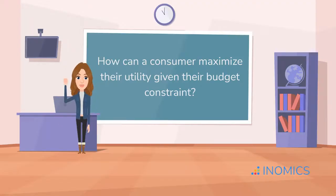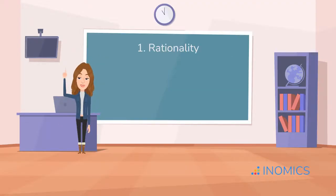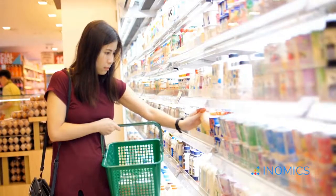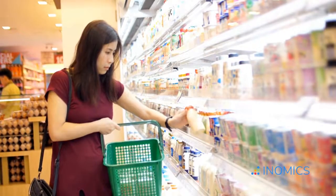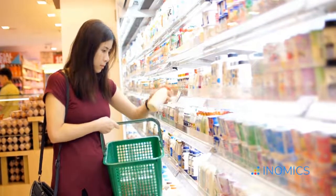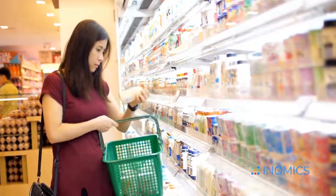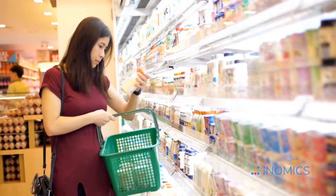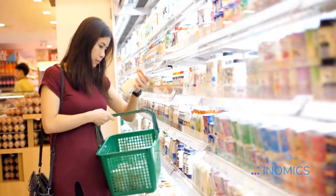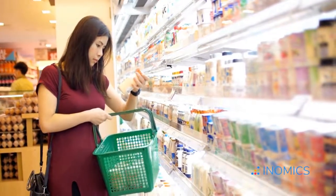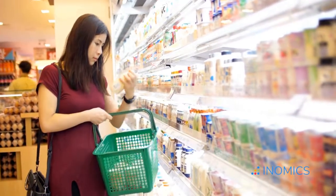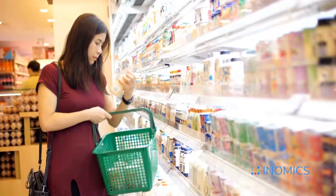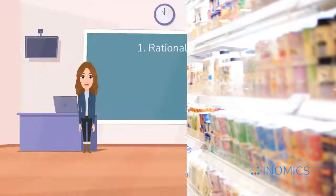First up: rationality. Economists assume consumers are rational, meaning they make decisions aimed at maximizing their utility. You might be thinking — I don't always make the best decisions. And you're not alone. We'll come back to this in a moment.